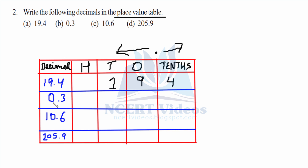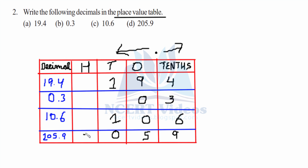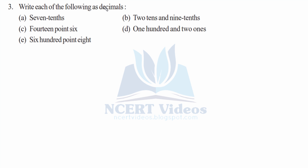Point three goes to the tenths, that is three tenths, and zero in the ones position. Six, zero, and one in the tens positions. Similarly, nine in the tens position, five, zero, and doing hundreds. This is how we complete this question.